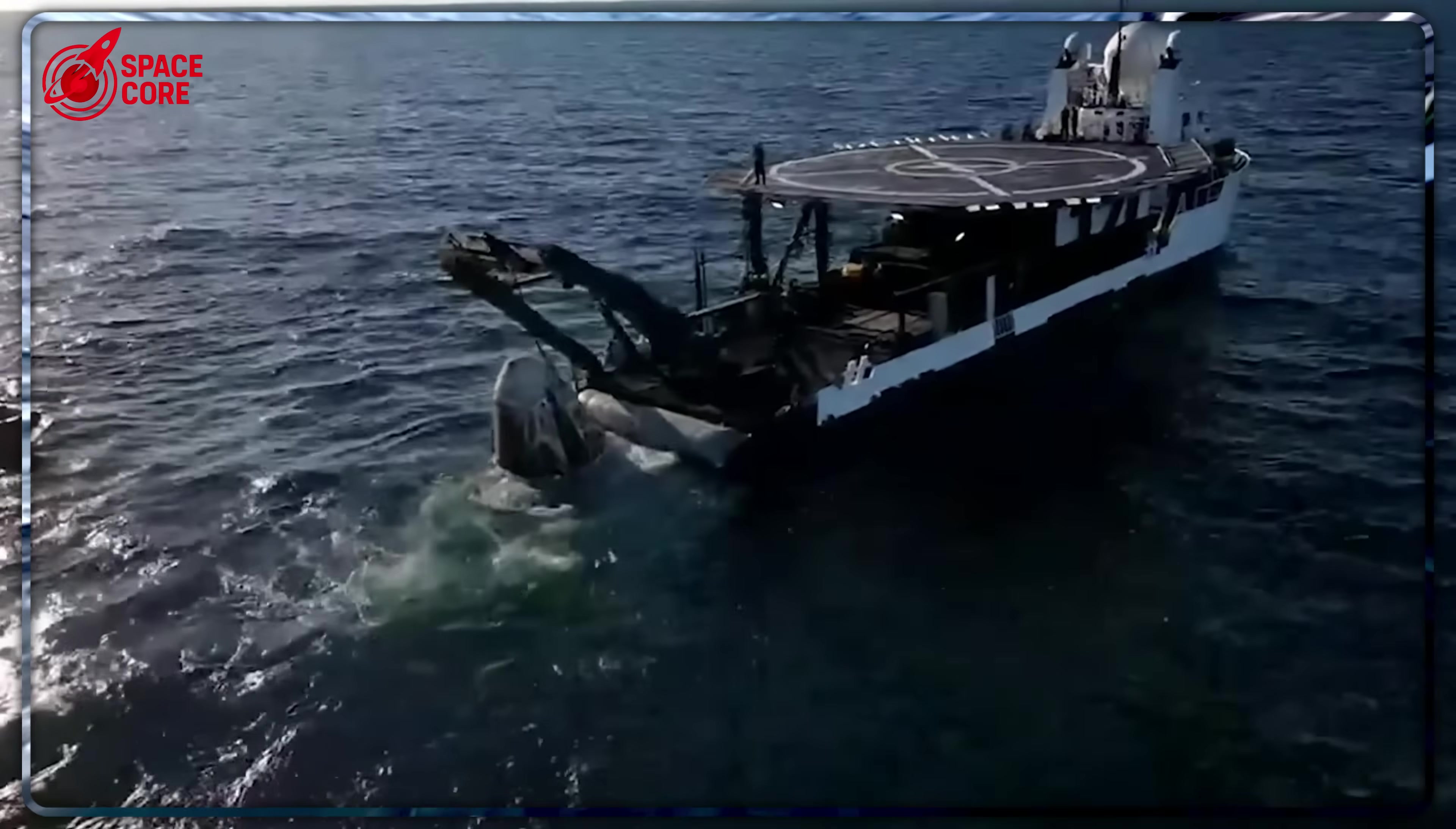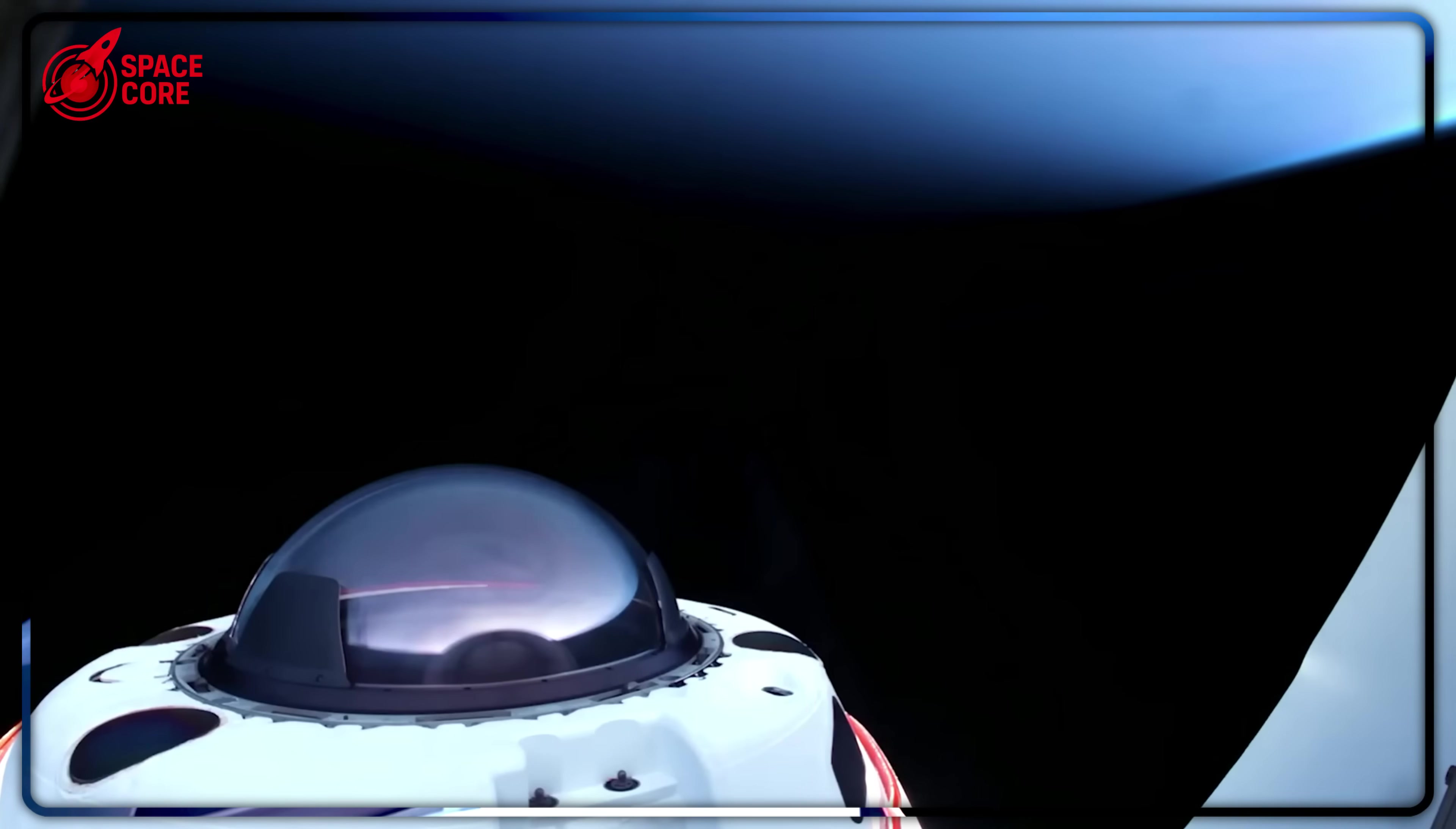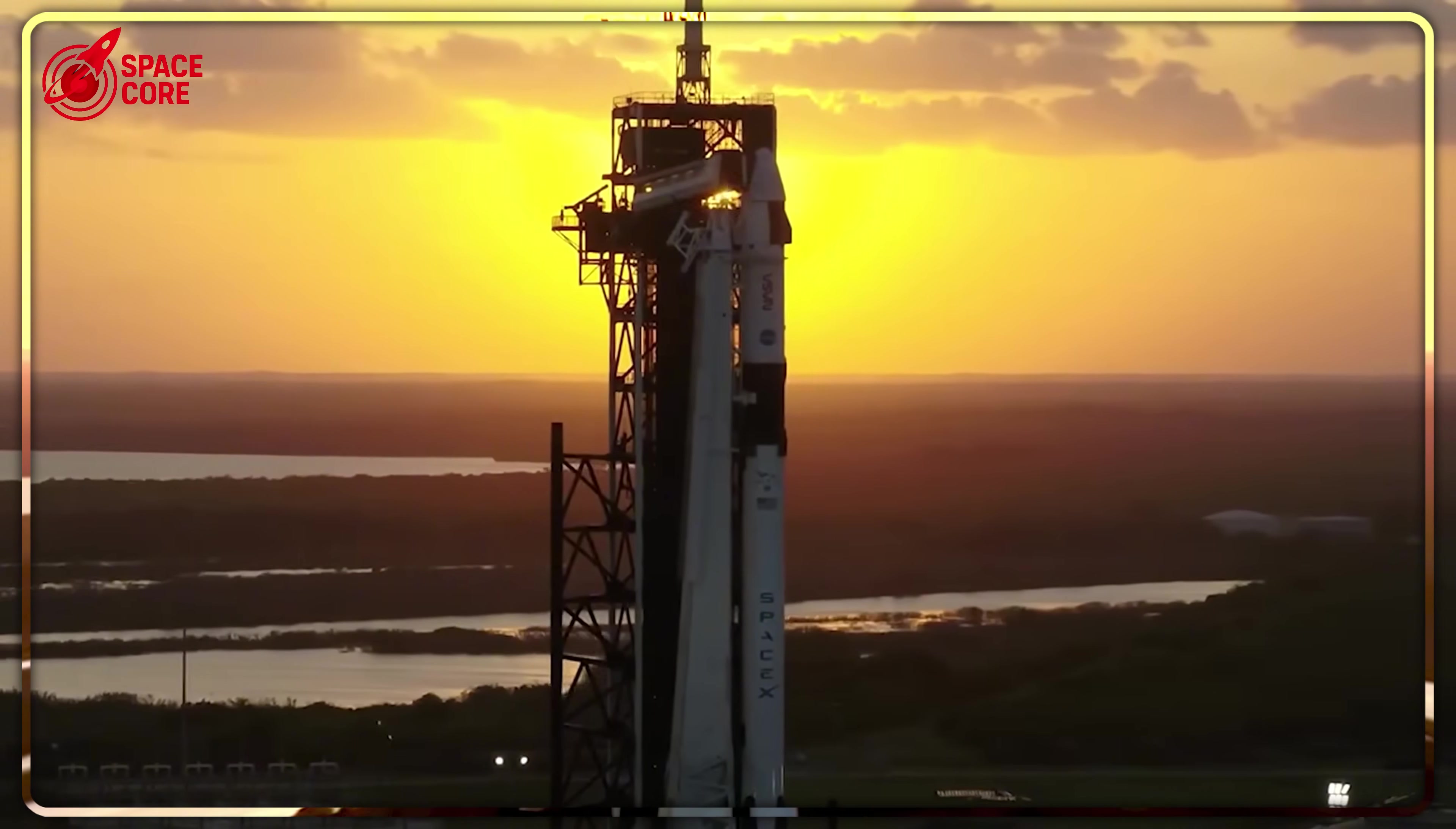This shift couldn't come at a more critical time. NASA's Artemis 3 mission plans to land astronauts on the Moon by 2027 using a lunar version of Starship. Meanwhile, Jeff Bezos' Blue Origin just finished applying spray-on foam insulation to their Blue Moon lander for an unmanned test flight this year. Both companies are betting everything on propulsive landing. No parachutes, no ocean recovery, just pure rocket power bringing spacecraft down exactly where they need to be. It's the technology Musk desperately wanted for Dragon in 2014, finally getting its moment a decade later.